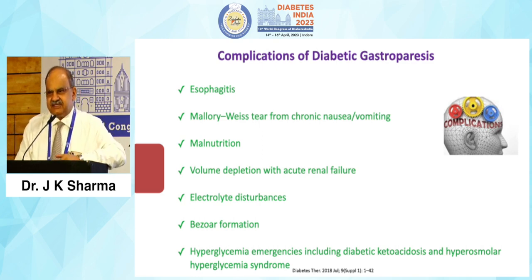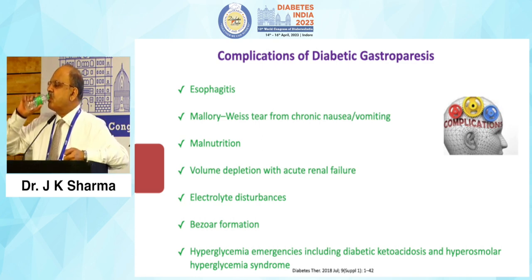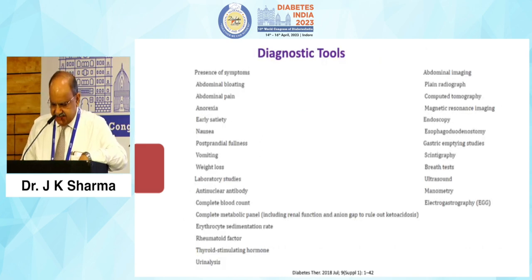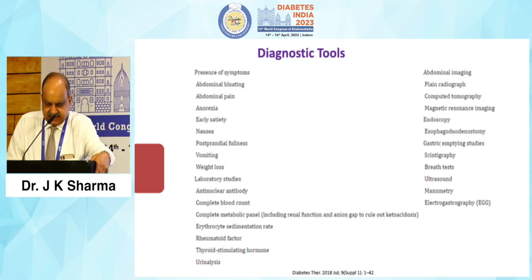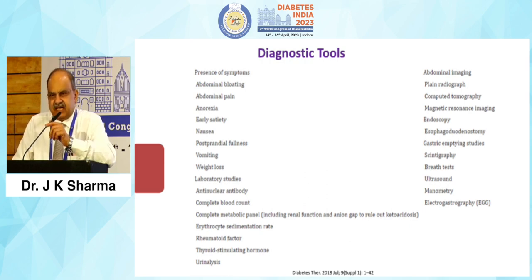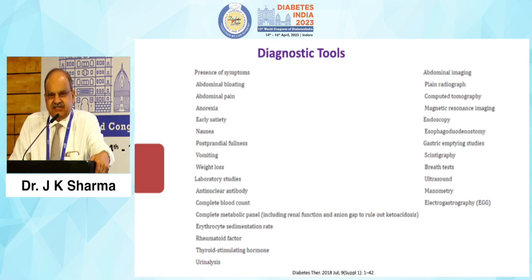Do not ignore the patient's complaints. At times, a diabetic patient may only present with these symptoms. Before going to specific diagnostic tools, we must listen to the patient, take a proper history, and look after the diabetic control of the patient. Symptoms include abdominal bloating, abdominal pain, anorexia, early satiety, and nausea.